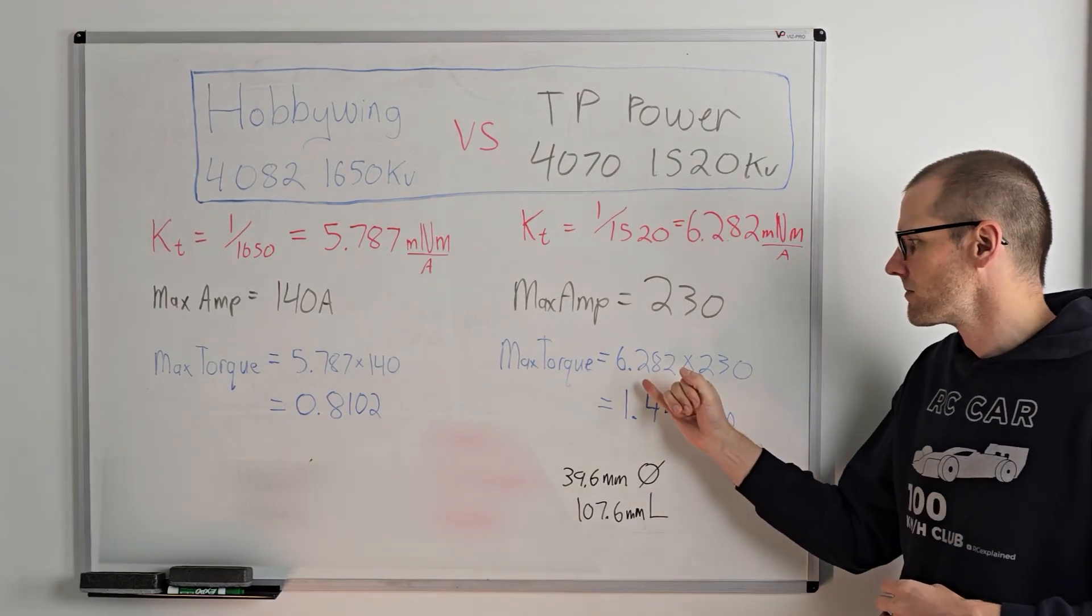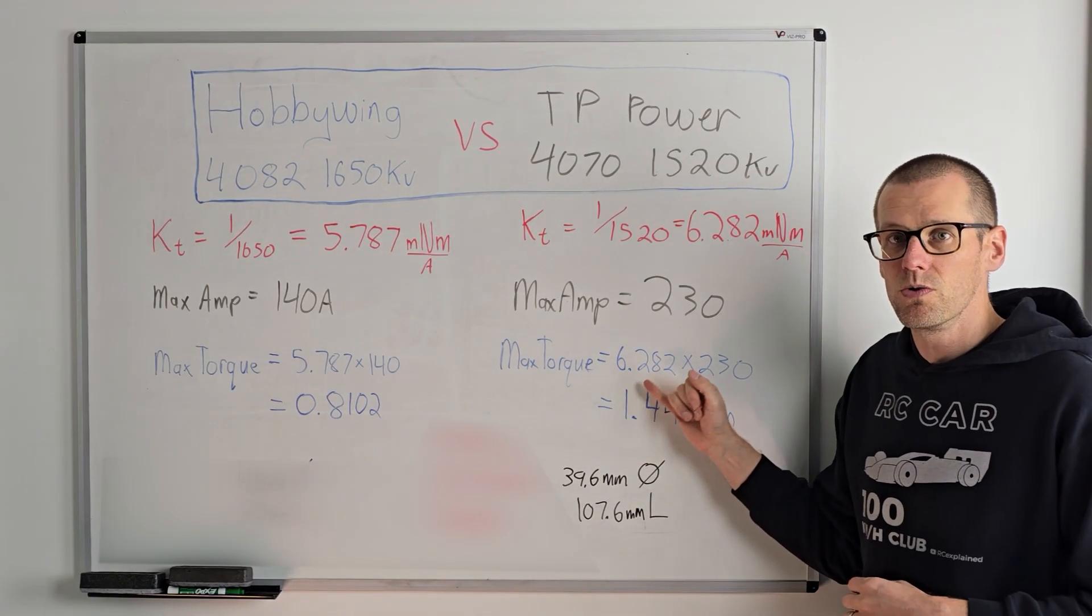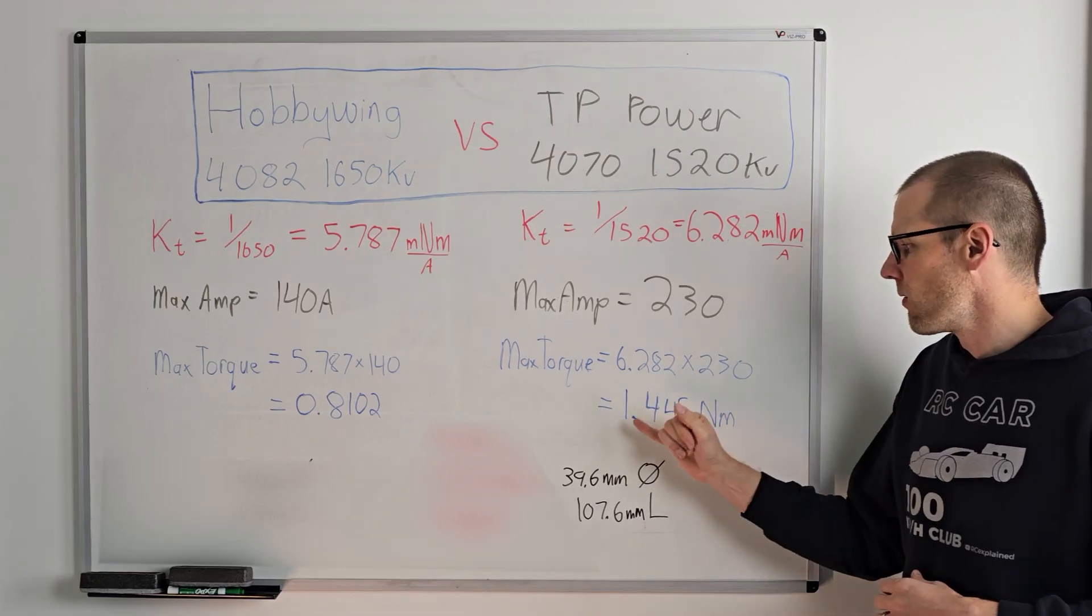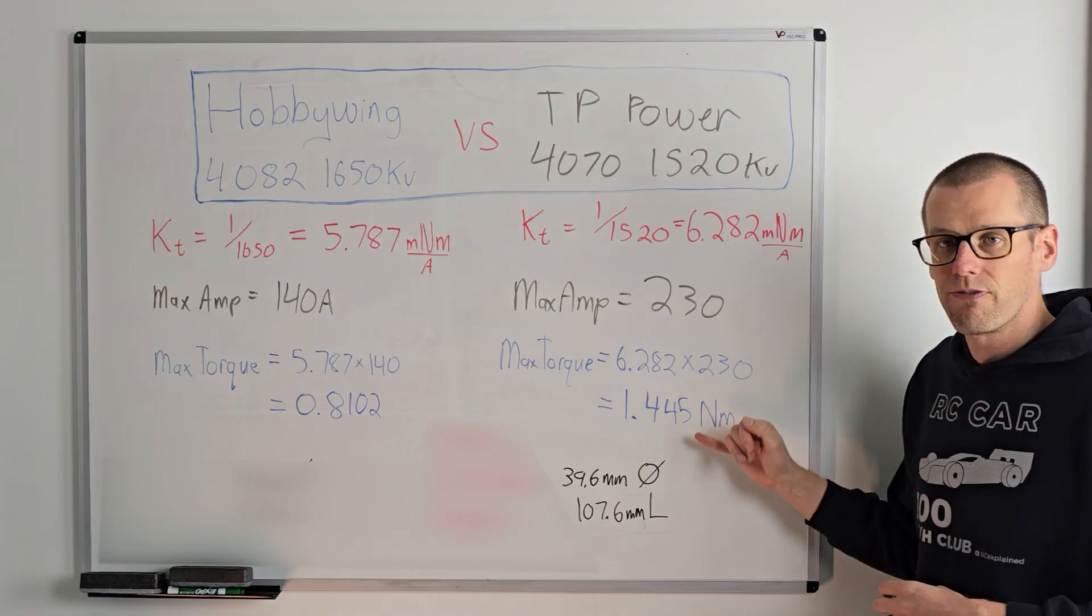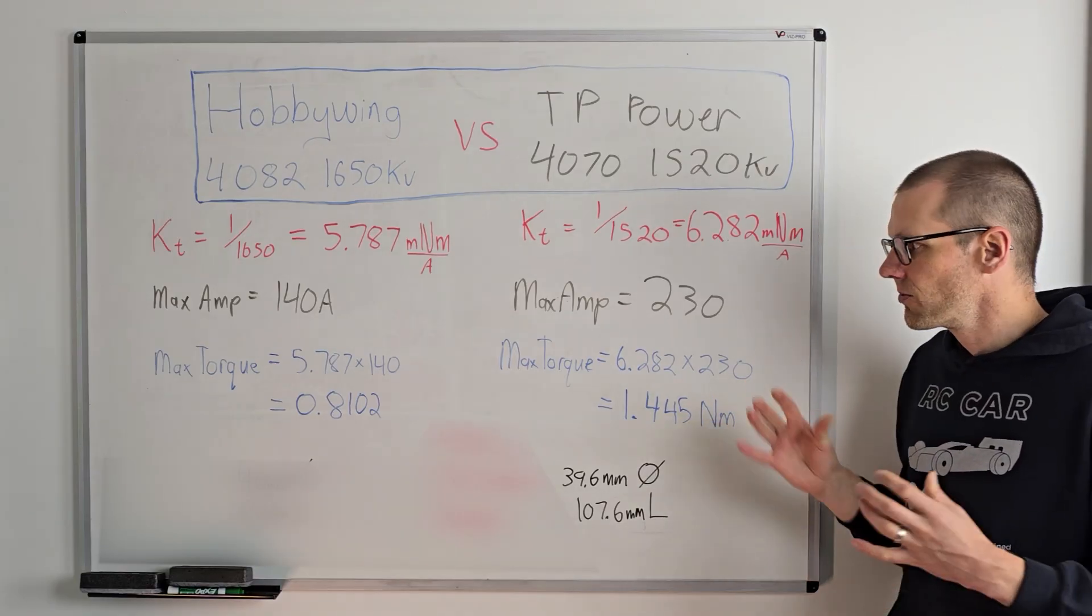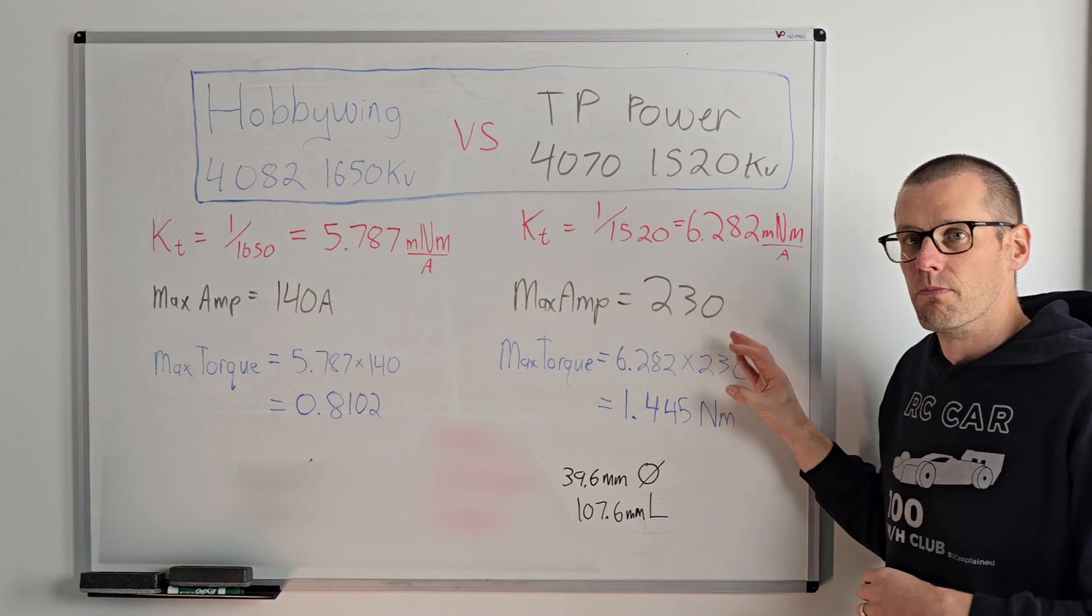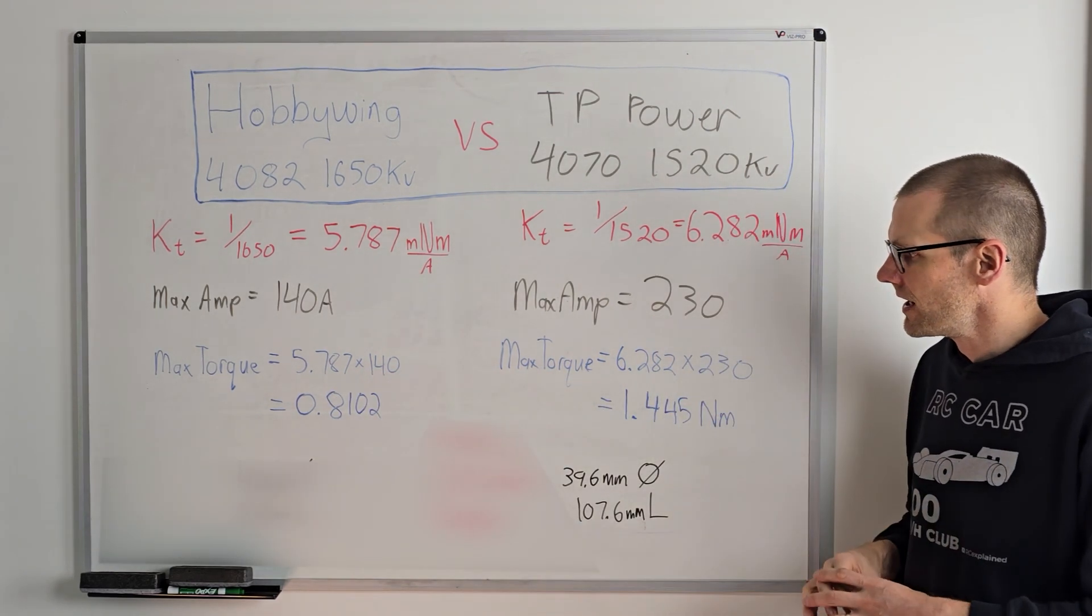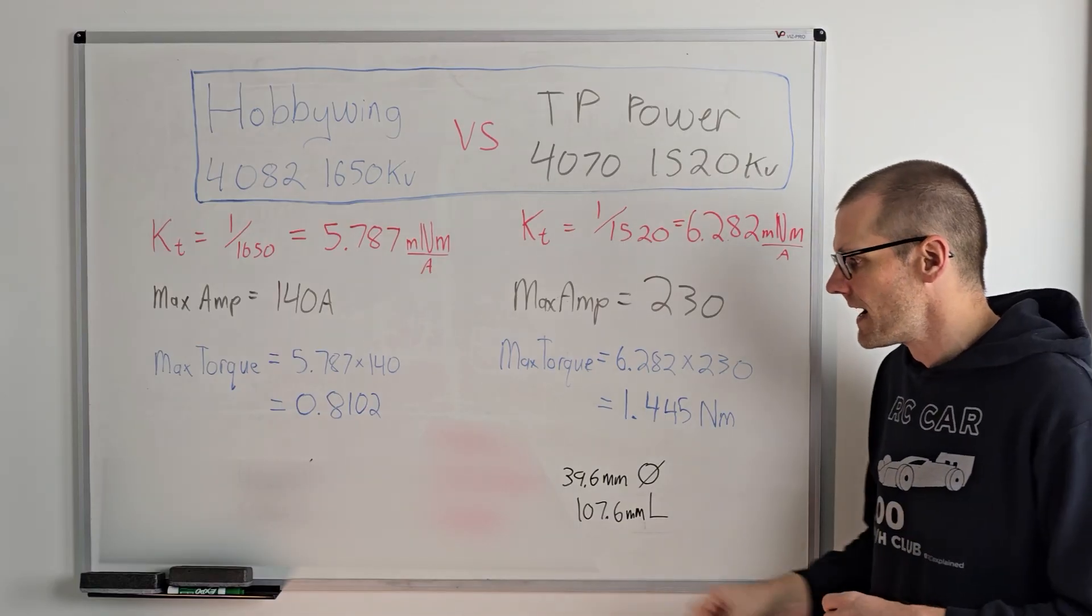Now jumping to the TP power, we get maximum torque equal to 6.282 multiplied by 230 and we get 1.445 newton meters. Here we can already see that this motor produces more torque than our Hobbywing brushless motor. Let's look into the difference there in what that looks like.